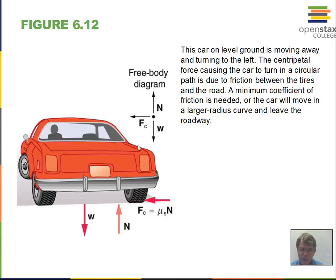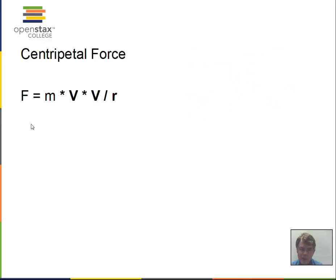Here's a car free body diagram — the dot represents the car. In the vertical direction, the car is not accelerating; the normal force and weight balance. In the horizontal direction, the car is going around a circle and we do have an unbalanced force — the centripetal force towards the center, with no opposing force — producing centripetal acceleration.